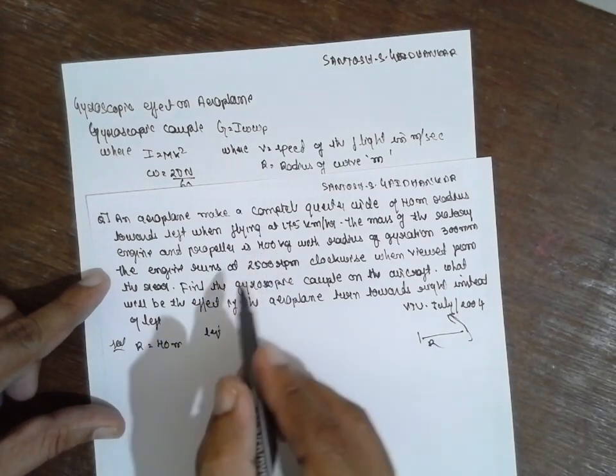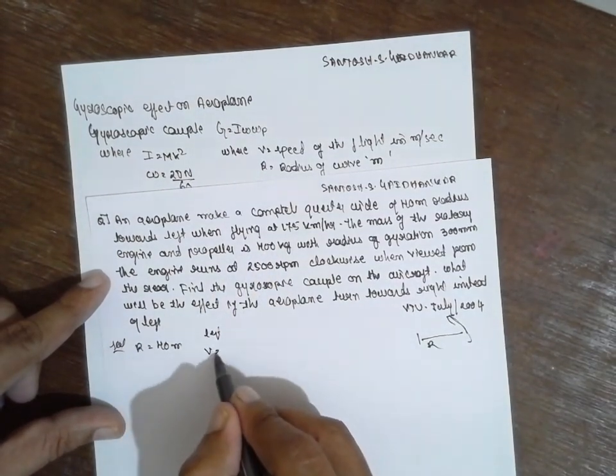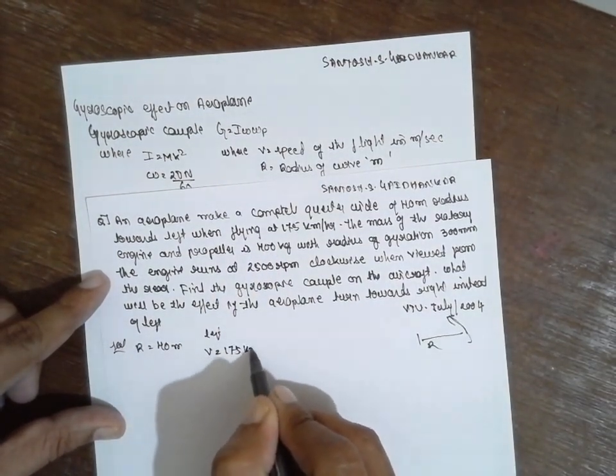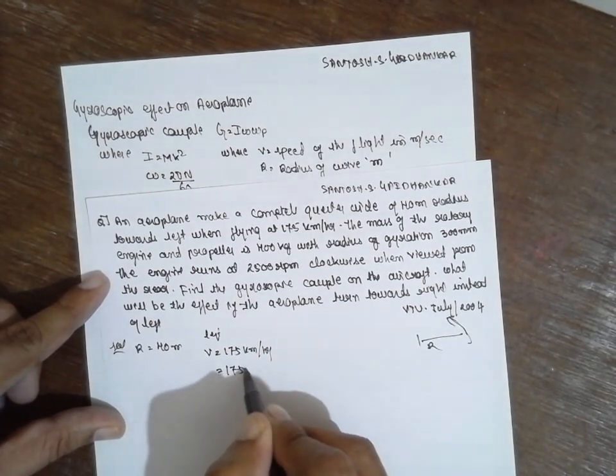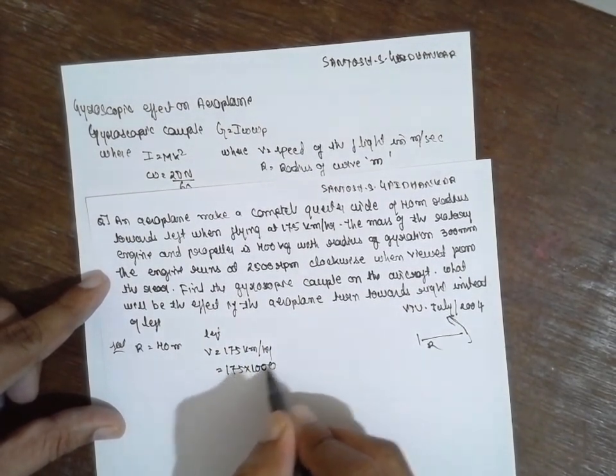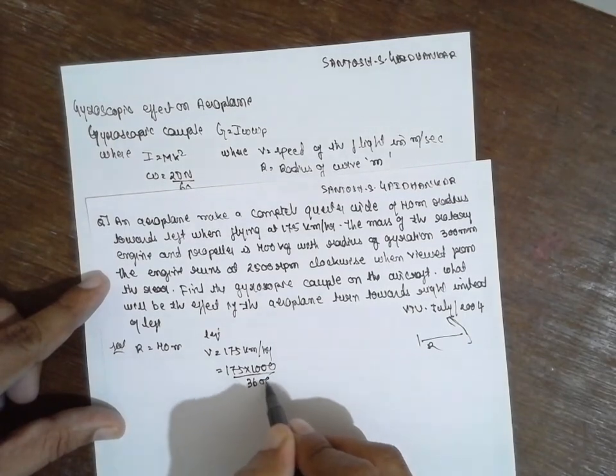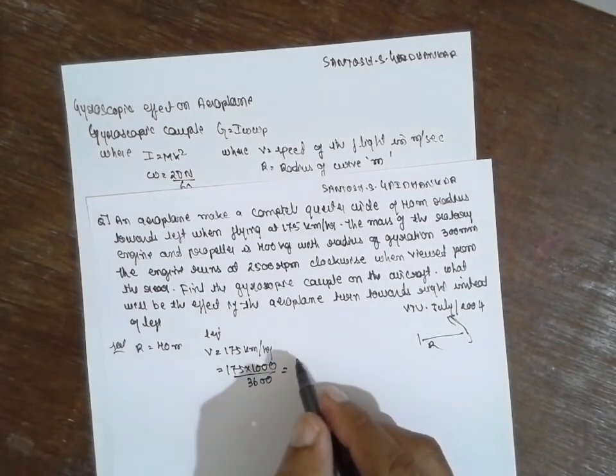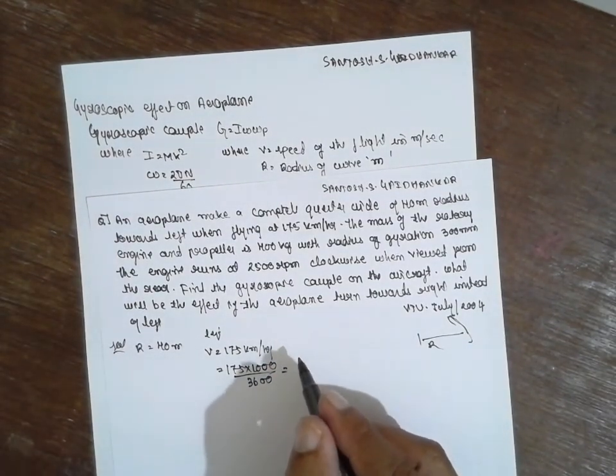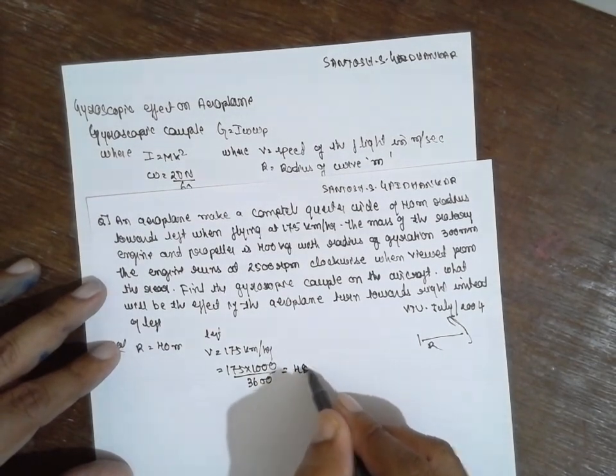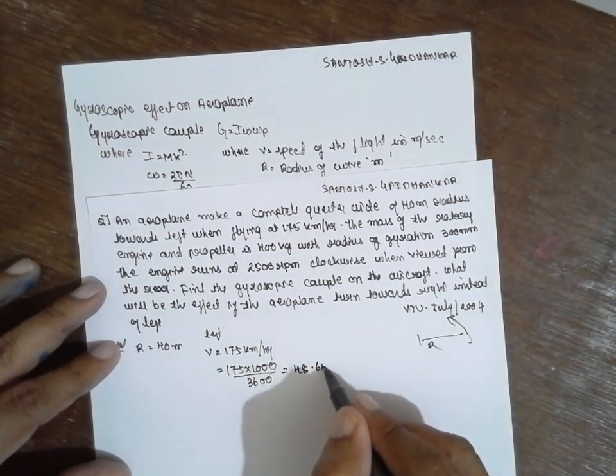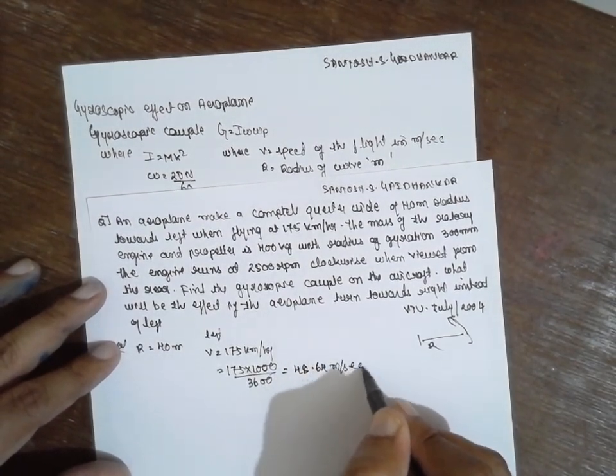And flying at V is equal to 175 kilometer per hour. It has to be converted to 175 into 1000 divided by 3600. The answer for this one will be 48.64 meter per second.